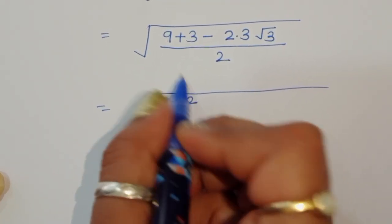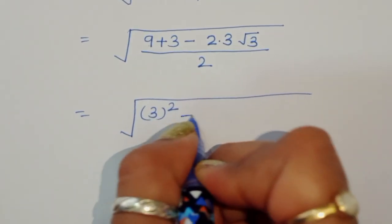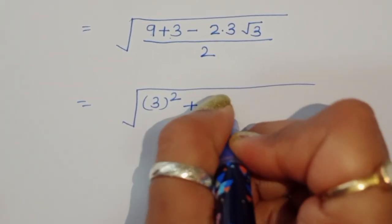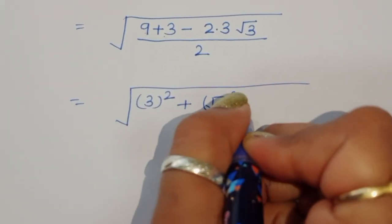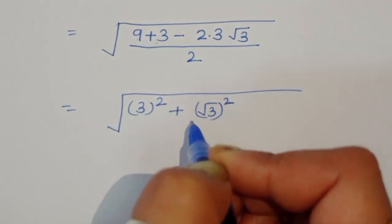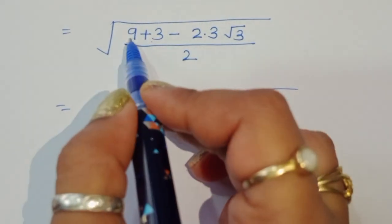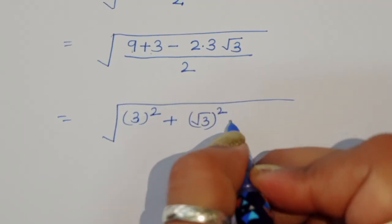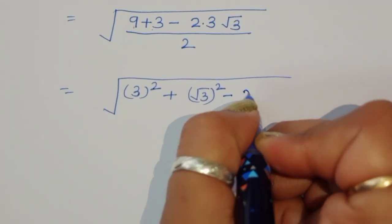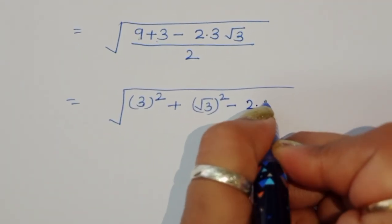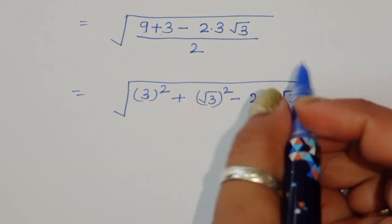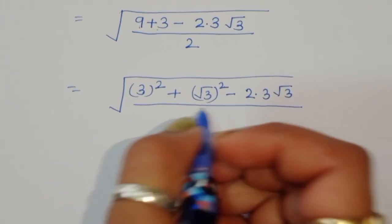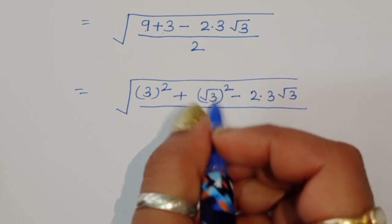Now we can write 9 as 3 squared, and 3 as square root of 3 whole squared. So the numerator is 3 squared plus (square root of 3) squared minus 2 times 3 times square root of 3, divided by 2.